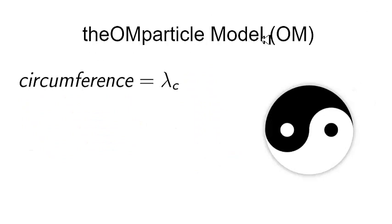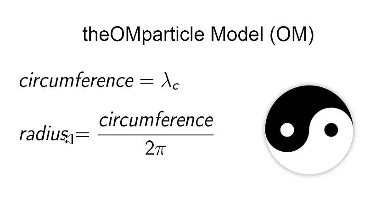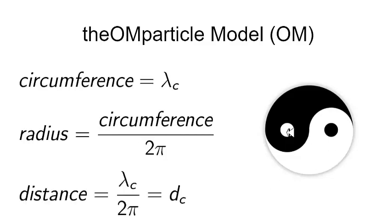The Ohm Particle Model is, in fact, a quantifiable model. The way I quantify it is as follows: the circumference of the circle — the outer edge — the distance a point travels in one cycle, is the Compton wavelength of the particle. The radius is circumference over 2 pi. But more interesting, the distance between the two points — between the peak and the valley — is also the circumference over 2 pi, or the Compton wavelength divided by 2 pi. I refer to this as D, not R as is commonly done. So technically, I don't need the radius.